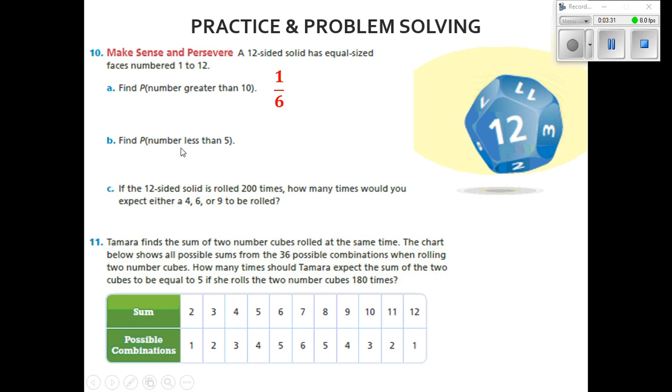Find the probability the number is less than 5. Well, that would be 1, 2, 3, or 4. That's 4 numbers out of 12. If we reduce that, 4 out of 12 can be reduced to 1 out of 3.